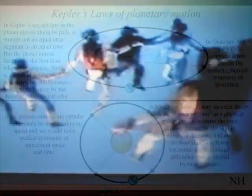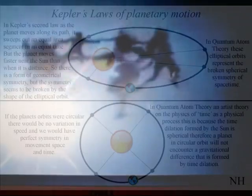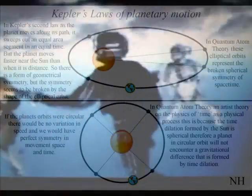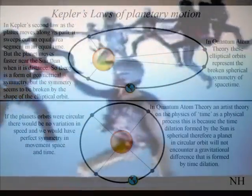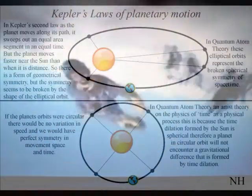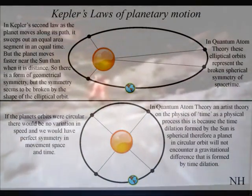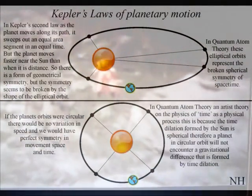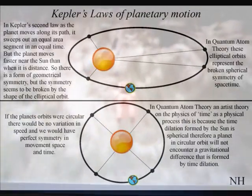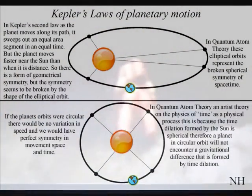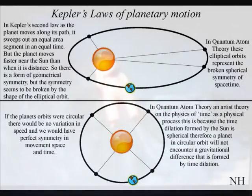The broken symmetry of this process can be seen in the motion of the planets, with the elliptical orbits of Kepler's laws of planetary motion. As a mystic, Kepler believed the underlying structure of the universe was built from perfect geometric forms, but what he found was elliptical orbits that sweep out equal areas in equal times as the planets orbit the sun. In this theory, these elliptical orbits represent the broken symmetry of space-time.